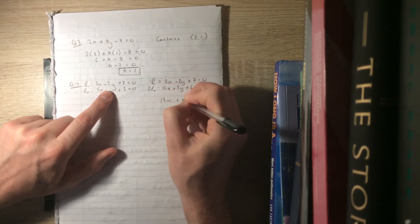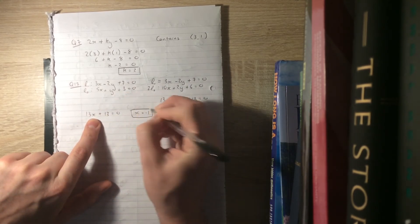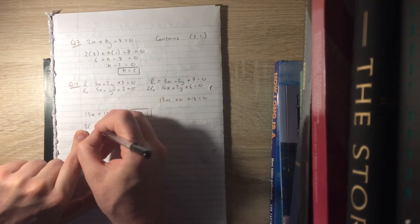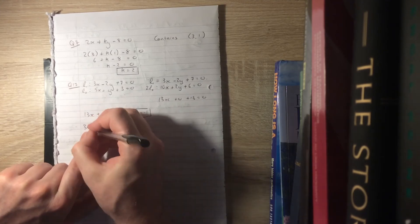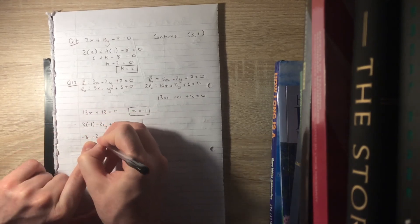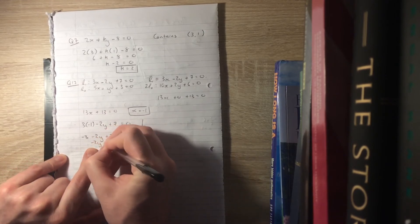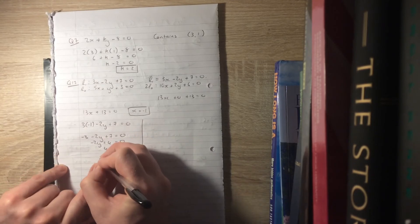So 13x plus 13 equals 0 means x equals minus 1. Now substituting back into l₁: 3 times minus 1, minus 2y plus 7 equals 0. That gives minus 3 minus 2y plus 7 equals 0, so minus 2y plus 4 equals 0. Moving the 2y over: 4 equals 2y, so y equals 2.